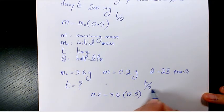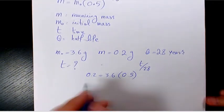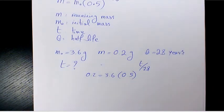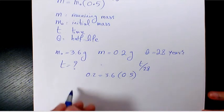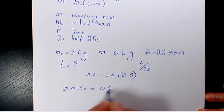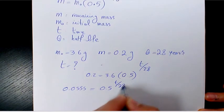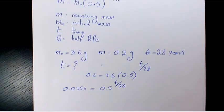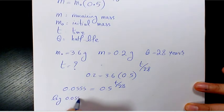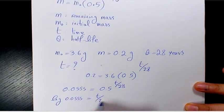So 0.2 divided by 3.6 is going to be 0.0555 equals 0.5 to the power of T over 28. So we do log of both sides: log 0.0555 equals T over 28 times log 0.5.